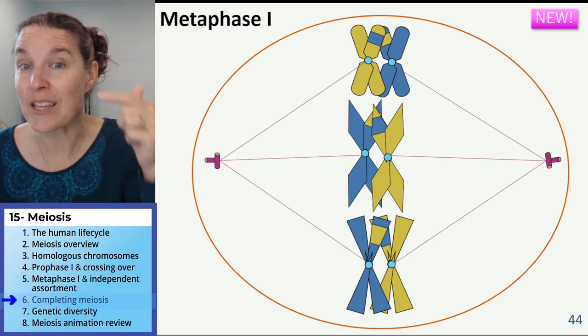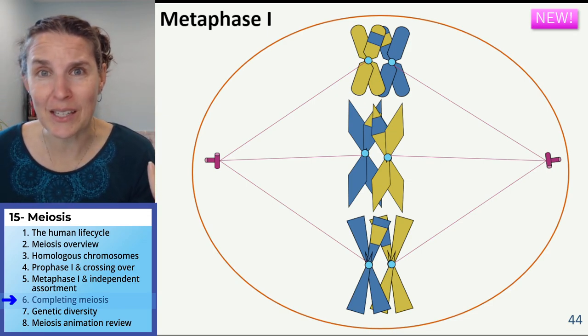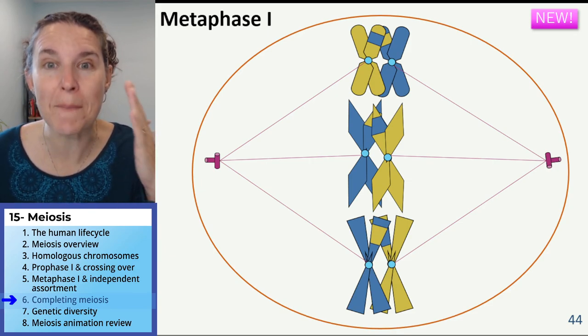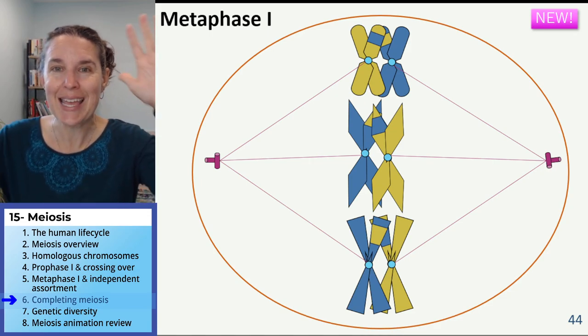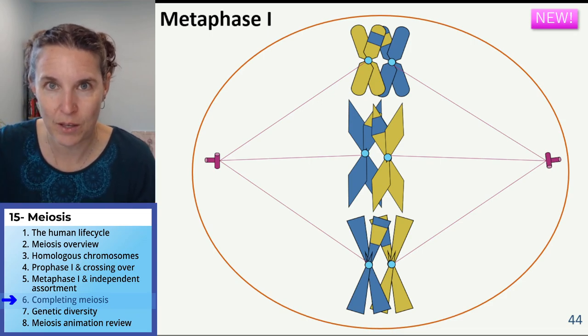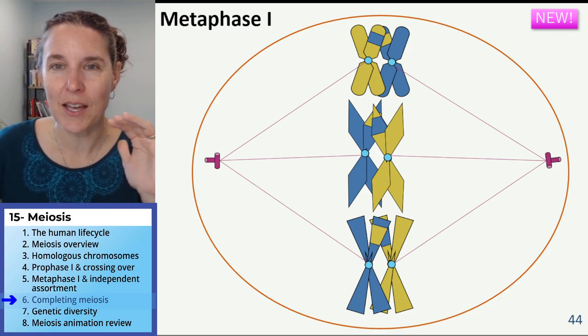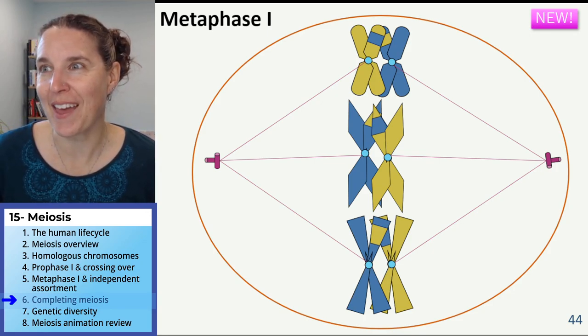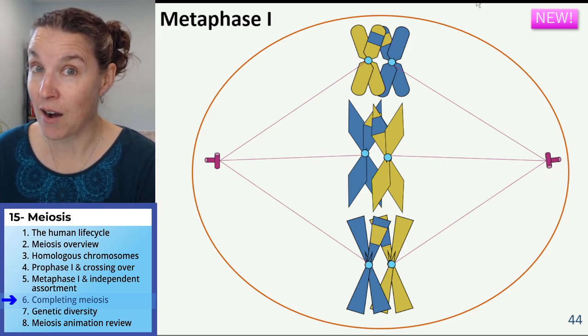Two to the twenty-third power. It's like eight million. There's eight million possible gametes from independent assortment alone during meiosis in your gonads right now. What? I would say pat your gonads, but maybe don't do that right now. Okay. Shall we continue? Your gonads are amazing.